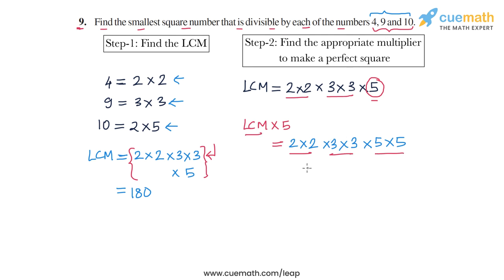So this is the number we want - the smallest number which is a multiple of all the three numbers 4, 9, and 10, and which is also a perfect square. So what is this number? This number is 4 into 9 - 2 into 2 is 4, 3 into 3 is 9, 5 into 5 is 25.